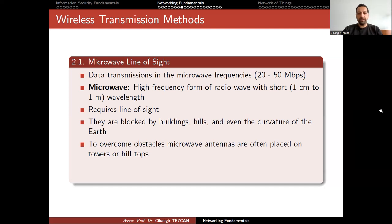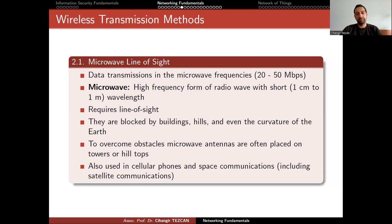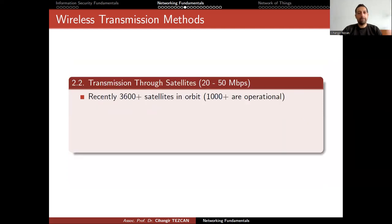To overcome obstacles, microwave antennas are often placed on towers or hilltops. They are also used in cellular phones and space communications, including satellite communications. Transmission through satellites allows speeds of around 20 to 50 megabits per second.